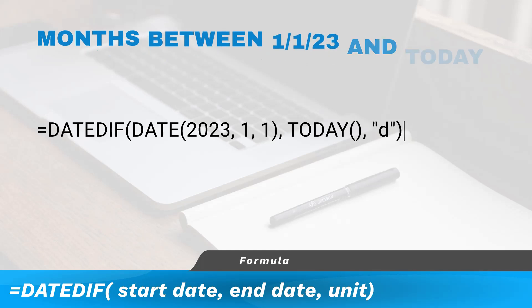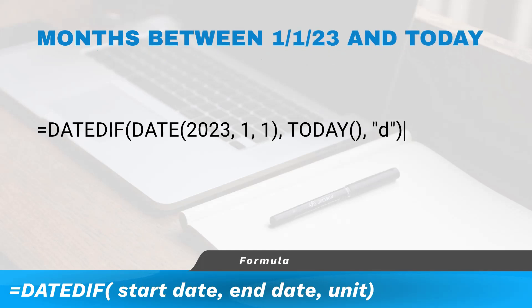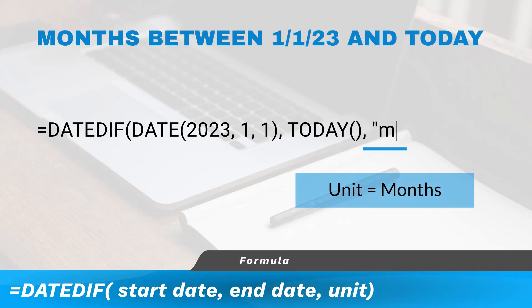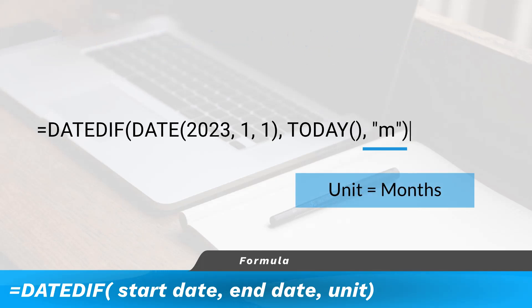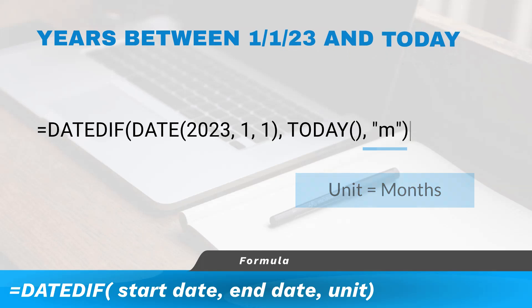To find the number of months between the same dates, use M as the unit. To find the number of years, use Y.